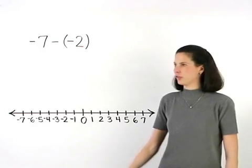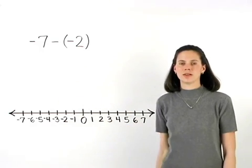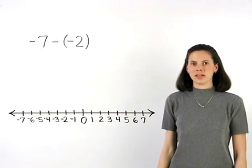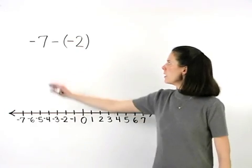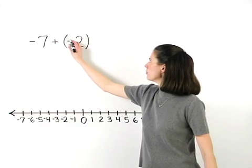To subtract the integers negative seven minus negative two, it's important to understand that when we have minus a negative, we can change it to plus a positive.